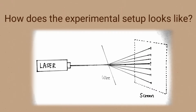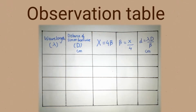For subsequent readings, we change the position and observe the diffraction patterns. The observation table will have lambda (wavelength of light), capital D (distance between wire and screen), and x equal to four times beta, giving beta equal to x upon four. Finally, the diameter of the wire is calculated as lambda D upon beta.